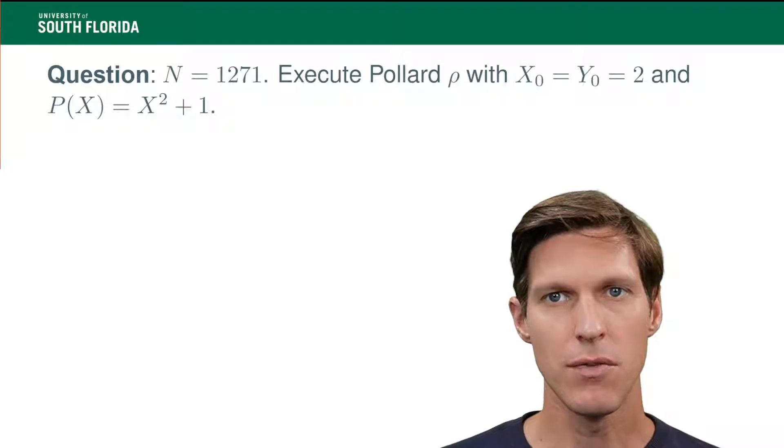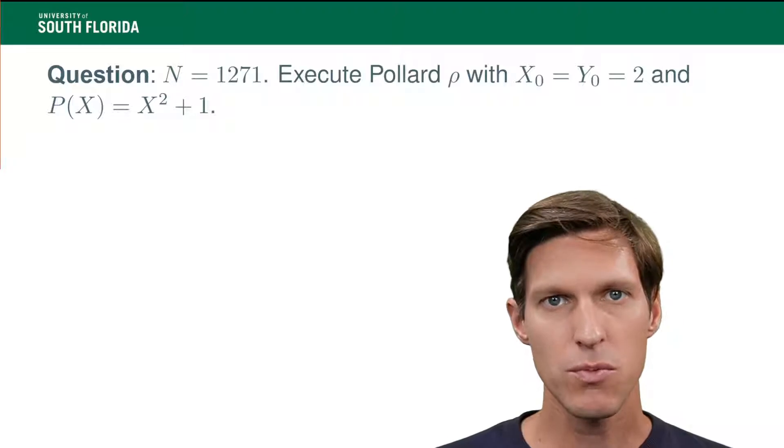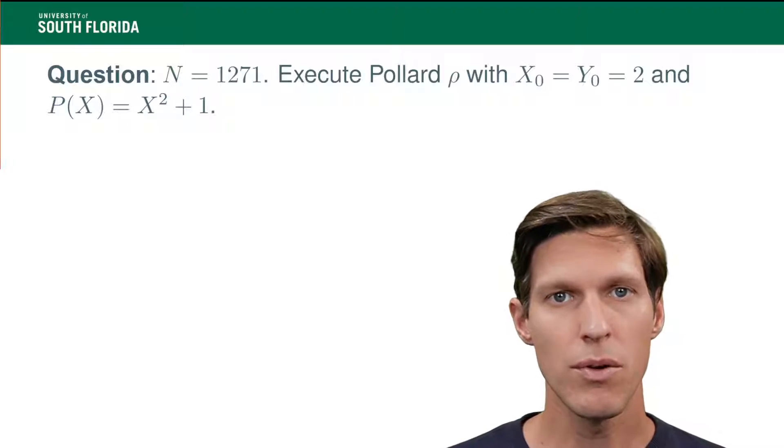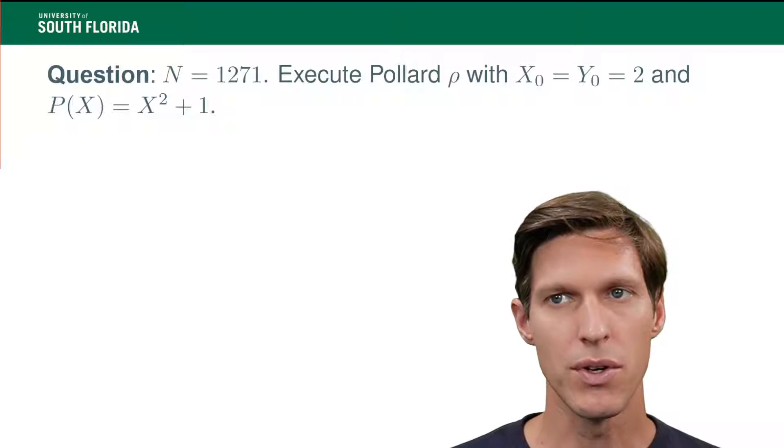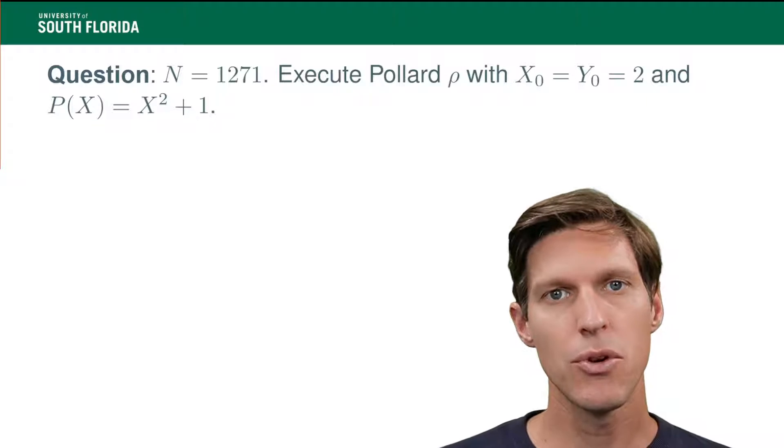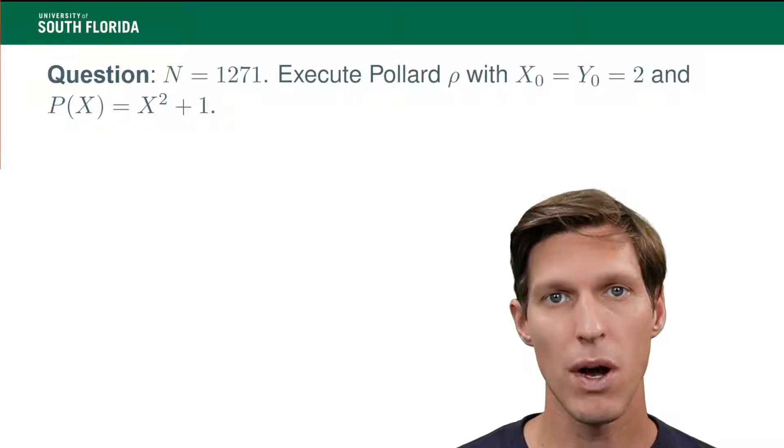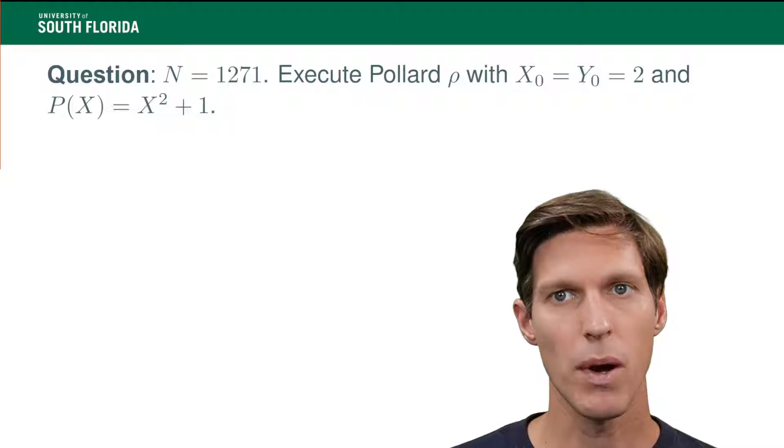Imagine that you're being given the following parameters. You have N equals 1271. The Pollard's Rho method depends on other parameters that we choose somewhat arbitrarily. Typically in exercises, I'll just give you the starting point. So we have a starting point of x0 equals y0 equals 2 in this particular exercise, and a polynomial P(X) equals X squared plus 1.